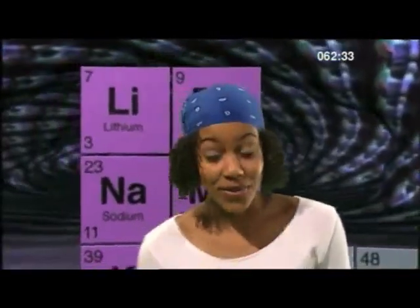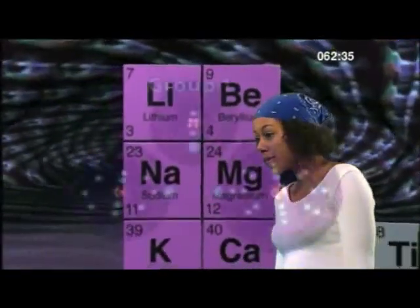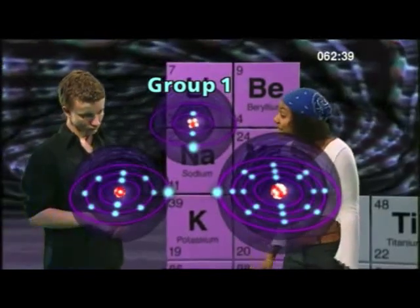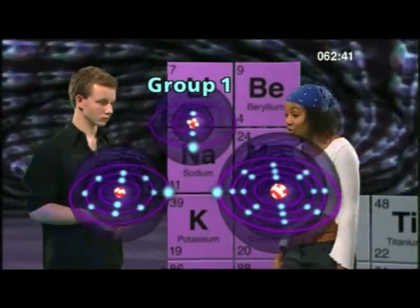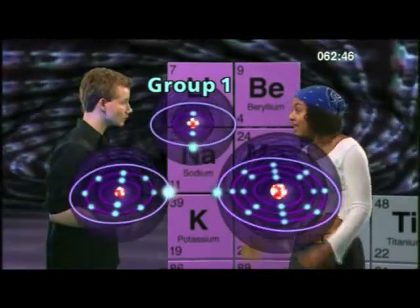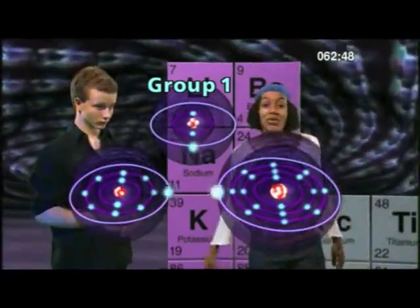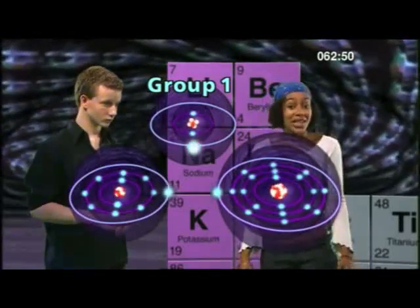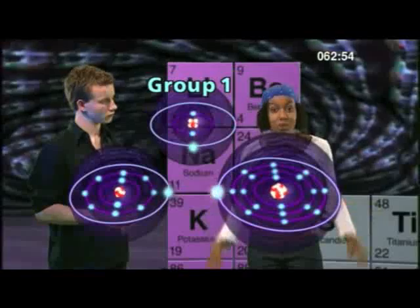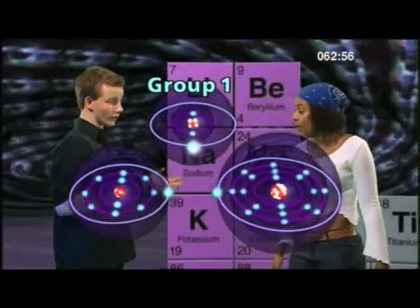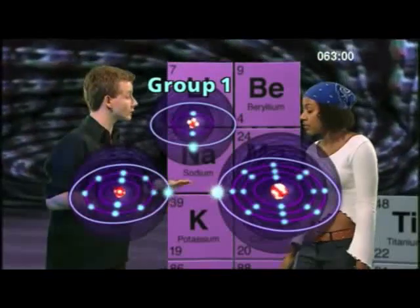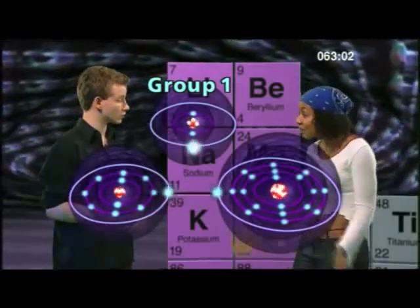Let's look at their atoms. Can you see any similarities in the arrangement of their electrons? They've all got one electron in their outer shell. Every element in group one has one electron in its outer shell. This means that these elements all react the same way with other chemicals. That is why these elements are all organised into the same group — because they all react the same way with other chemicals.